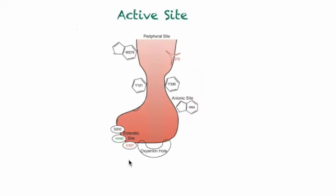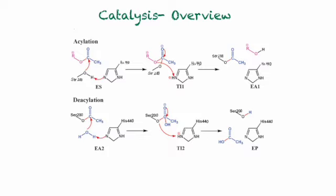The active site of acetylcholinesterase contains the esteratic site and the anionic site. The esteratic site is where catalysis occurs. It contains a catalytic triad: serine 200, histidine 440, and glutamic acid 327. The anionic site is composed of 6-7 negatively charged amino acids, including tryptophan 84. Now let's review catalysis of acetylcholinesterase.